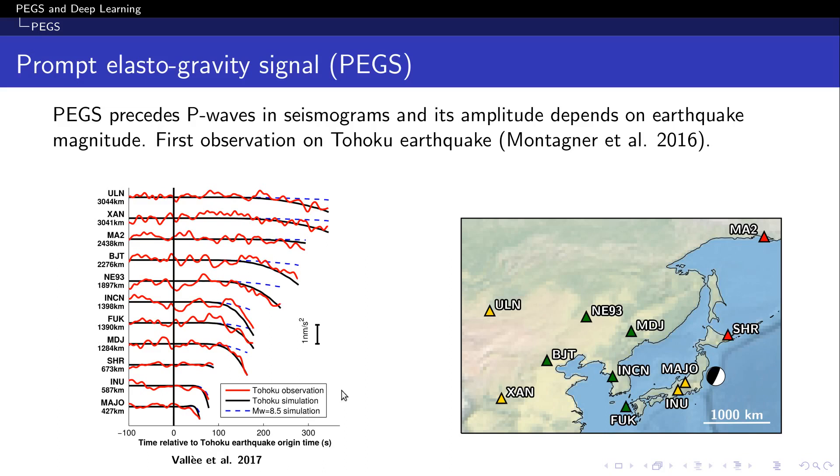Finally, amplitudes show regional patterns. So this means that to extract as much information as possible about the source, we need to work with an array of stations to be able to record a regional pattern of PEGS.